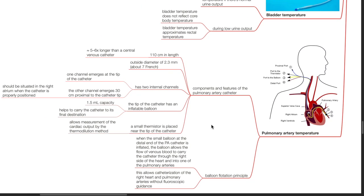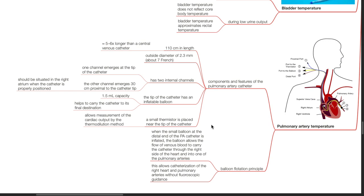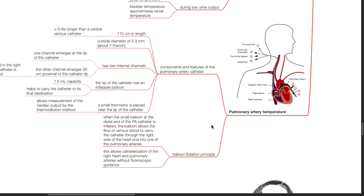Pulmonary artery temperature: the pulmonary artery catheter is 110 cm in length, with an outside diameter of 2.3 mm (about 7 French). It has two internal channels — one emerges at the tip, the other emerges 30 cm proximal to the tip and should be situated in the right atrium when properly positioned. The tip has an inflatable balloon of 1.5 mL capacity that helps carry the catheter to its final destination. A small thermistor placed near the tip allows measurement of cardiac output by the thermodilution method. The balloon flotation principle allows venous blood flow to carry the catheter through the right side of the heart and into one of the pulmonary arteries, enabling catheterization without fluoroscopic guidance.